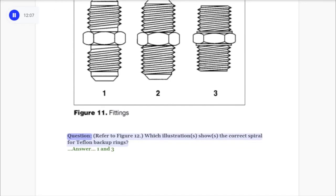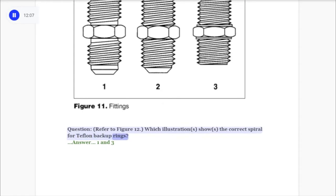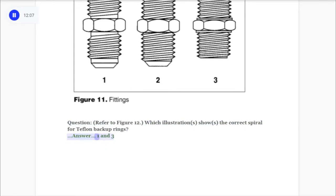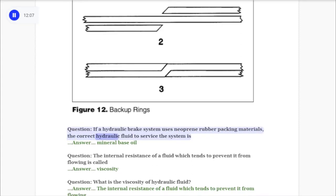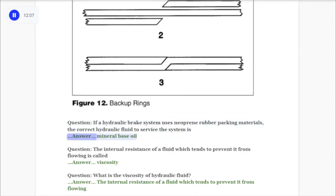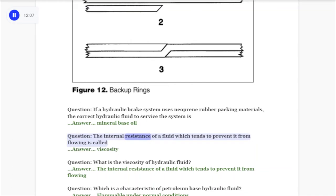Question: Refer to figure 12 — which illustration shows the correct spiral for Teflon backup rings? Answer: One and three. Question: If a hydraulic brake system uses neoprene rubber packing materials, the correct hydraulic fluid to service the system is mineral base oil.